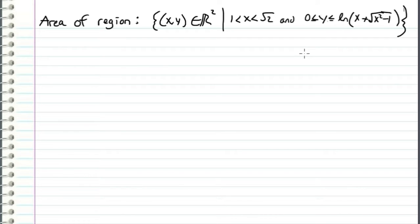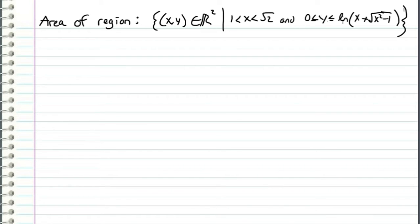In this video we've got another question submitted by Haddad. His question was: find the area of the region that contains the points in two dimensions, an xy-plane, such that x is greater than 1 and less than square root of 2, and y is greater than 0 and less than the natural log of x plus square root of x squared minus 1.